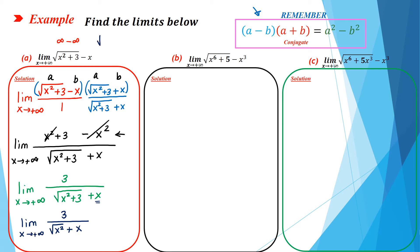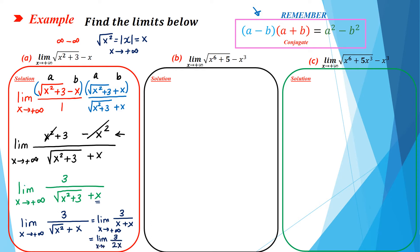As you know, square root of x squared equals the absolute value of x. But since x goes to positive infinity, which is a positive quantity, you can replace absolute value of x by x. If x goes to negative infinity, you have to replace it by negative x. So we have limit of 3 over x plus x when x goes to positive infinity, which equals limit of 3 over 2x. And 3 divided by infinity equals 0.